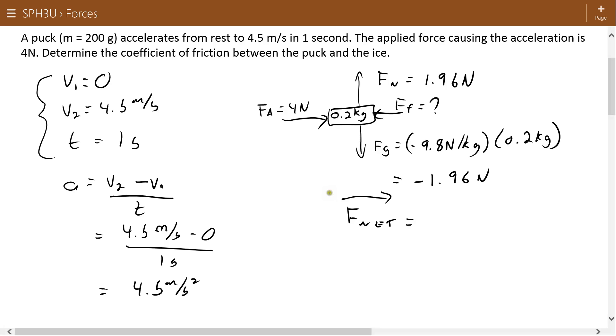Using Newton's second law, we can relate that to the net force that would be required to cause that acceleration. F net equals ma times an acceleration of 4.5 meters per second squared. And that's going to give us 0.9 newtons.